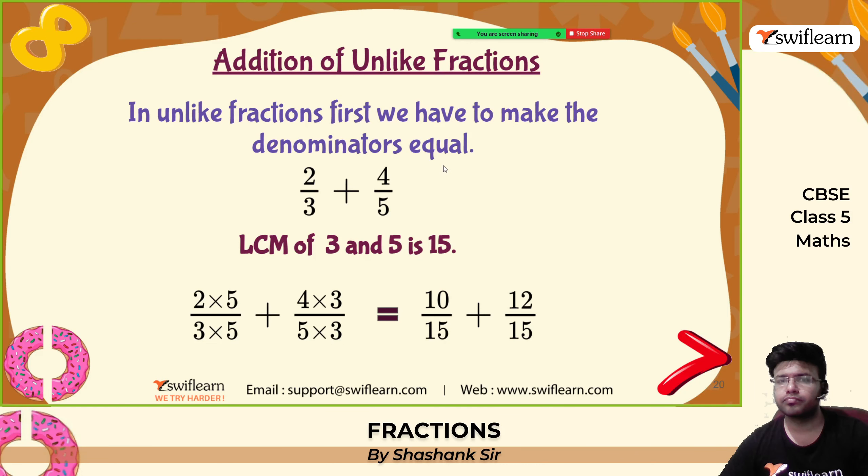Another example with denominator 20: add the numerators 3 plus 7 is 10, plus 9 is 19. So 19 by 20 is the answer.